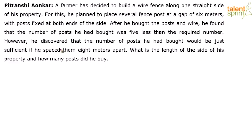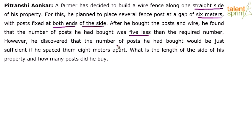There are two questions here: what is the length of the side of his property, and how many posts did he buy? A farmer has one straight length along which he has to build a wire fence. His initial plan was to put posts at a gap of 6 meters, with posts at both ends. After buying, he found he had 5 less posts than required. He then realized that the posts he bought would be just sufficient if spaced 8 meters apart instead of 6 — increasing the gap between consecutive posts by 2 meters.